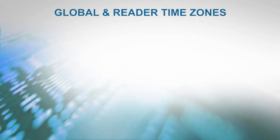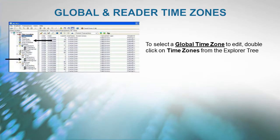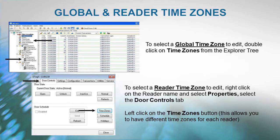To select a global time zone to edit, double-click on Time Zones from the Explorer tree. To select a reader time zone to edit, right-click on the reader name and select Properties, then select the Door Controls tab and left-click on the Time Zones button. This allows you to have different time zones for each reader.